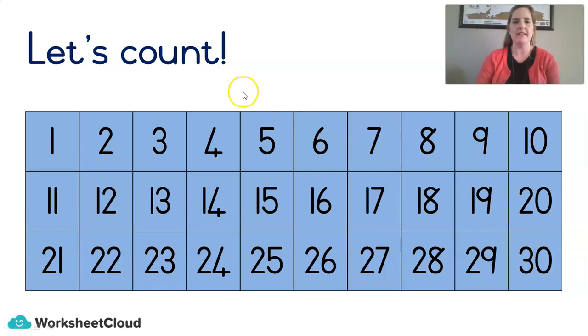How about we count in fives? That means five plus five plus five. So, we're starting at five, ten, fifteen, twenty, twenty-five, thirty. Did you get that? It's like a little pattern. All the numbers in the five column and the ten column.